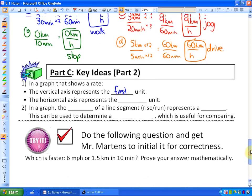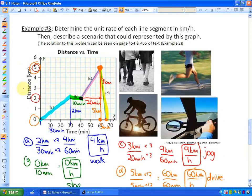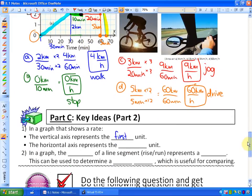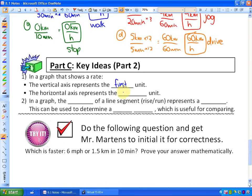So in this previous example, the first unit was kilometers. So we did kilometers per hour or kilometers in an amount of time. So the vertical axis is the first rate. The horizontal axis represents the second unit.